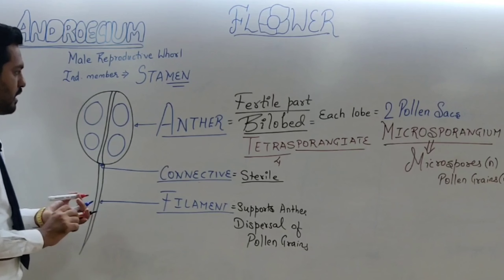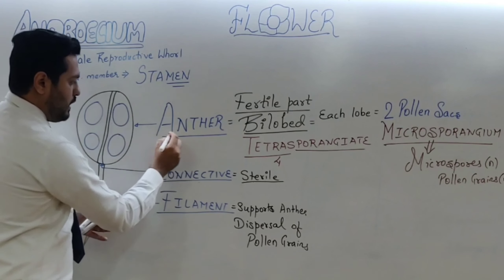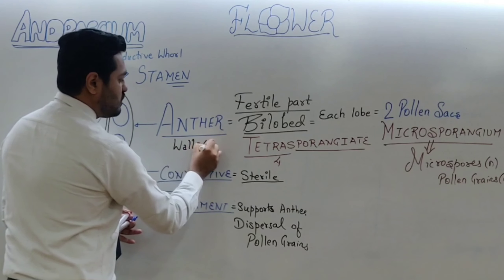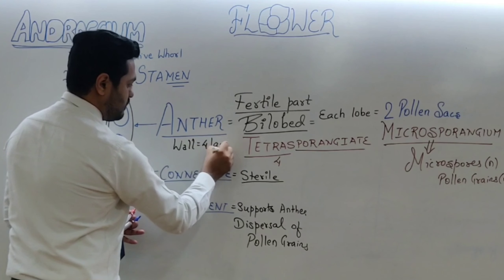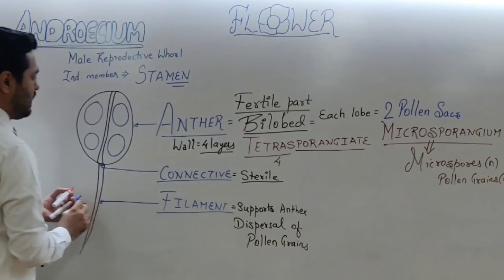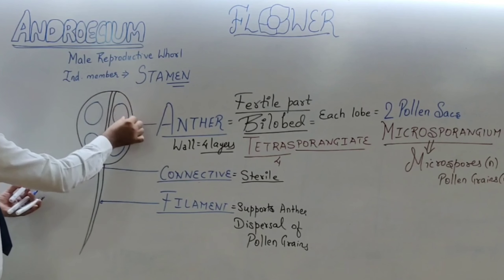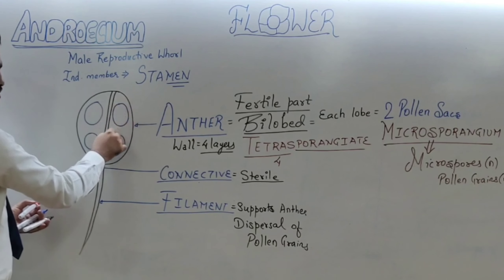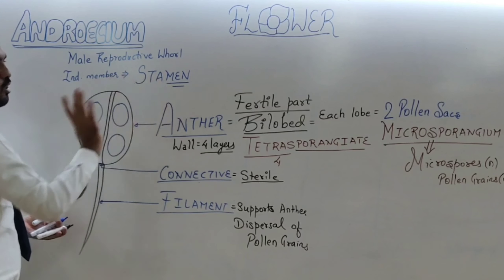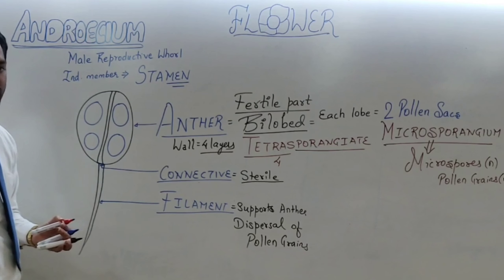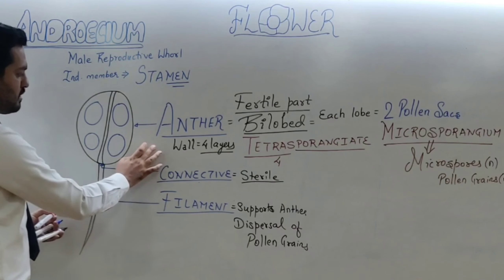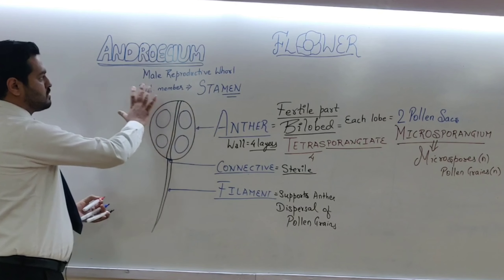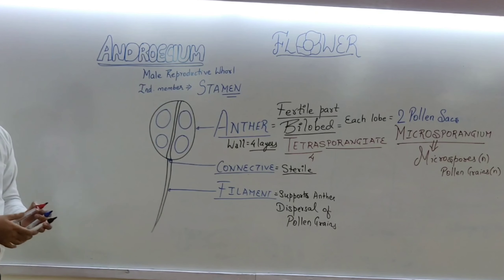We have discussed the anther wall and its four layers in a separate video. The central portion of the anther is the pollen sac or pollen chamber. So this covers the detailed discussion about the anther, connective, filament, and the androecium overall.